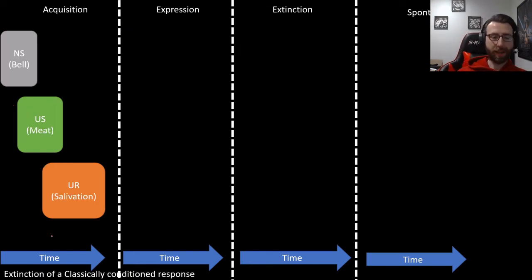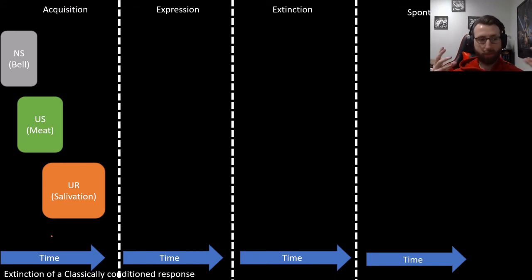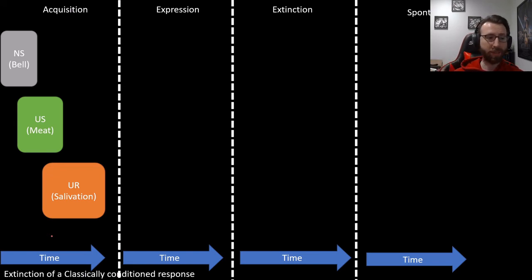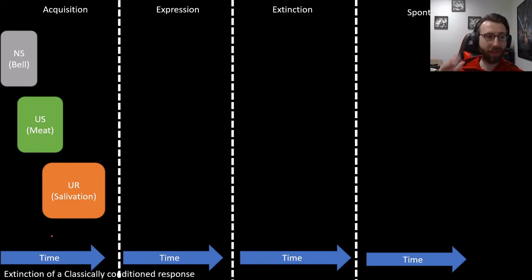Let's talk about extinction. Extinction means kind of the same thing as it does in the context of operant conditioning. The main difference is that in operant conditioning it's the performing of a response and then the absence of the reinforcer that fades the behavior over time. With classical conditioning it's basically just the presentation of a conditioned stimulus alone without the unconditioned stimulus. With enough pairings of the CS alone with no US, it's going to naturally fade the conditioned response.